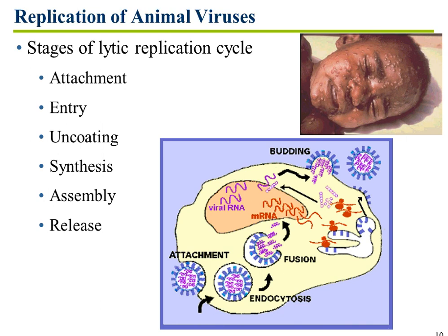I have just taken you through stages of lytic infections and lysogenic infections in bacteria — those were bacteriophages. Let's turn to animal replication. I'm going to stop here because this is a longer section, and we will do video two. Thank you.